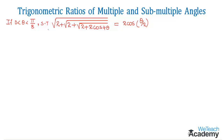First let us find the value for π/8. π/8 is nothing but 180 degrees divided by 8, which is equal to 22 degrees. So since 0 < θ < π/8, we can say that θ belongs to quadrant 1.